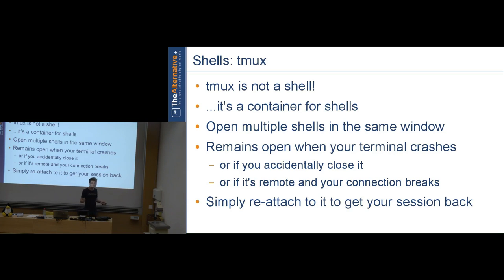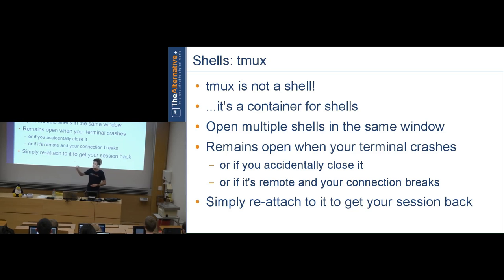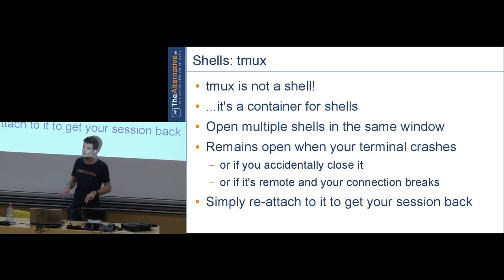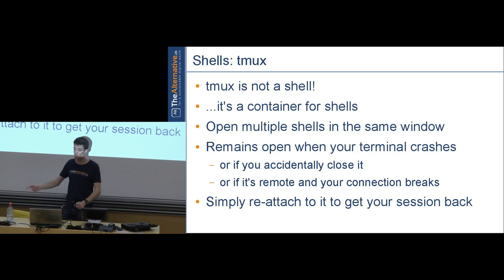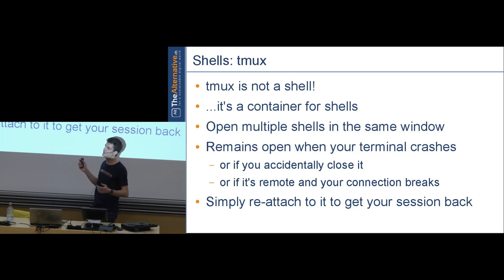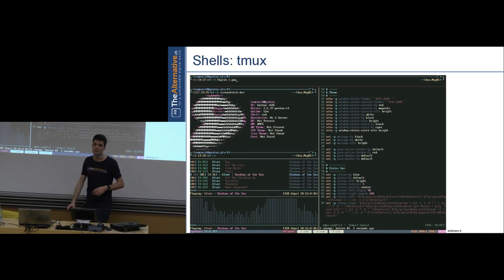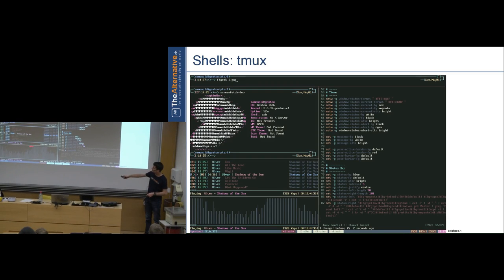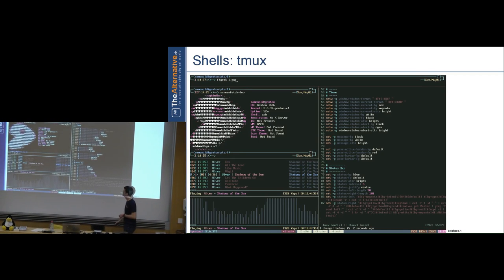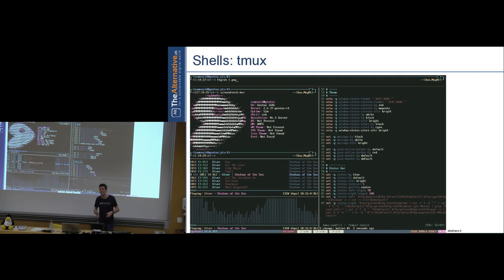tmux is not a shell but a container for shells with useful features. It displays multiple shells in one console window — handy when working on a remote machine. If your connection crashes, tmux stays alive and keeps running; you simply reattach with 'tmux -a'. It's a fail-safe console wrapper that's highly configurable — you can even have a music visualization in the console.